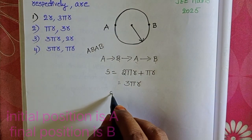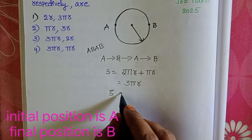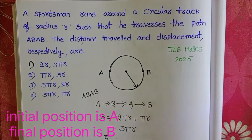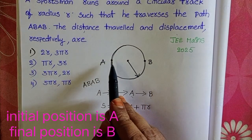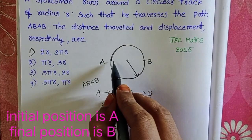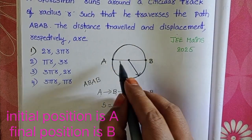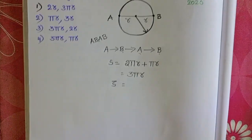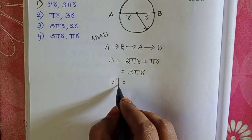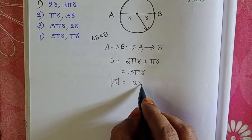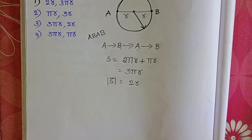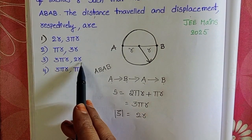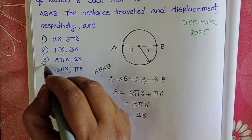Next, we want displacement. The shortest distance between the initial and final position is called displacement. So from A to B, the shortest distance is R plus R. Therefore, the magnitude of the displacement equals 2R. Distance is 3πR and displacement is 2R. The third option is correct.